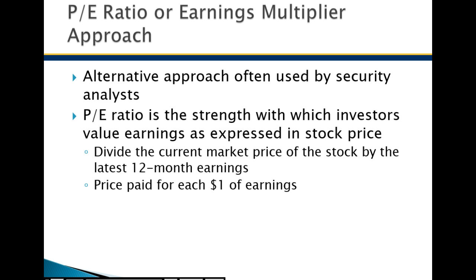This PE multiple reflects the willingness of people to pay for the stock. If a stock has a PE of 20 and earnings go from $1 to $2, the stock price is likely to double. Often the PE maintains or even grows if earnings are growing — if PE is 20 and earnings double, the PE may go to 21 or 22 because it's a growing company. So if you can accurately estimate next year's earnings and use a conservative PE, you can figure out next year's approximate stock price.